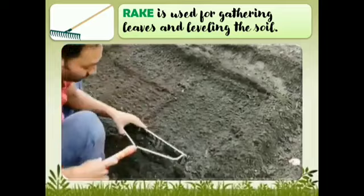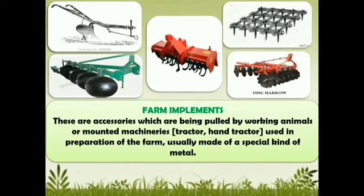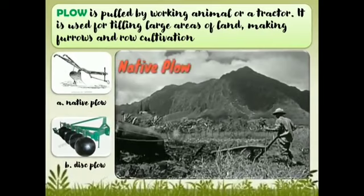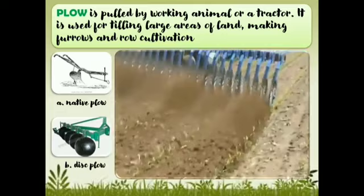Farm implements. These are accessories which are being pulled by working animals or mounted to machineries, used in preparation of the farm, usually made of a special kind of metal. The plow is pulled by a working animal or a tractor. It is used for tilling large areas of land, making furrows, and row cultivation.